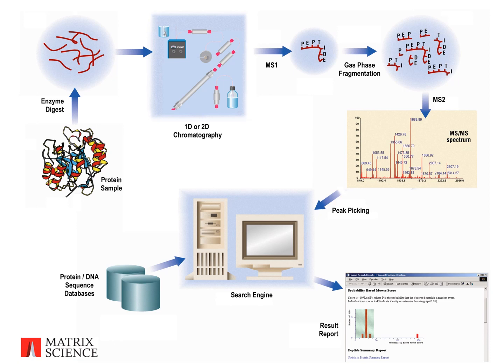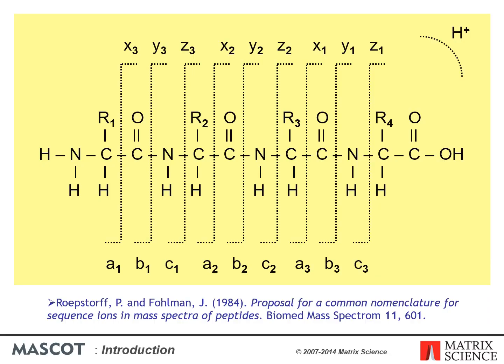Unlike a peptide mass fingerprint, use of a specific enzyme is not essential for MSMS. By looking at all possible sub-sequences of each entry that fit the precursor mass, it is possible to match peptides even when the enzyme's specificity is unknown, such as endogenous peptides. Database matching of MSMS data is possible because peptide molecular ions fragment at preferred locations along the backbone. In many instruments, the major peaks are B ions where the charge is retained on the N-terminus, and Y ions where the charge is retained on the C-terminus. Electron-capture dissociation, for example, produces predominantly C and Z ions.